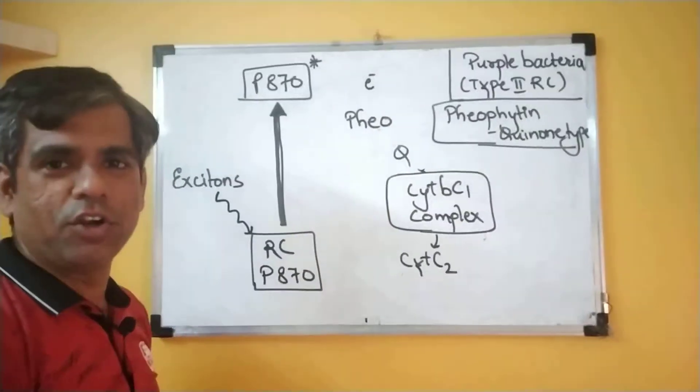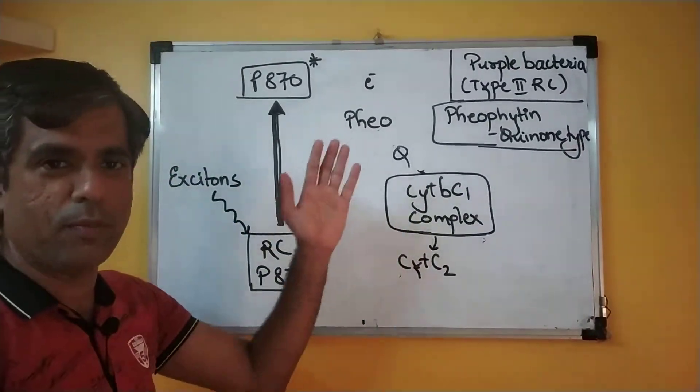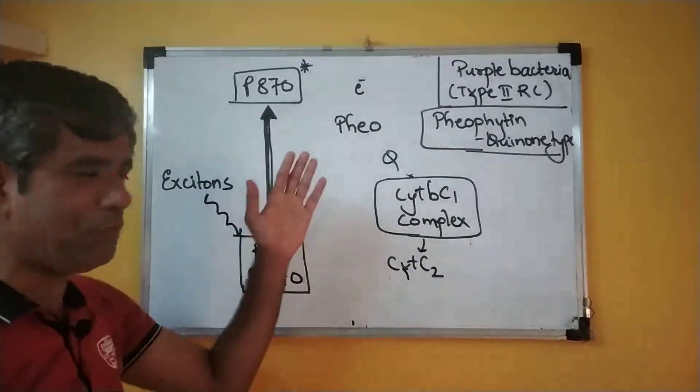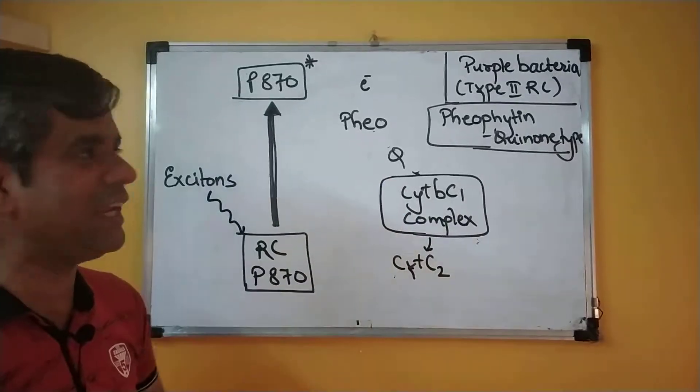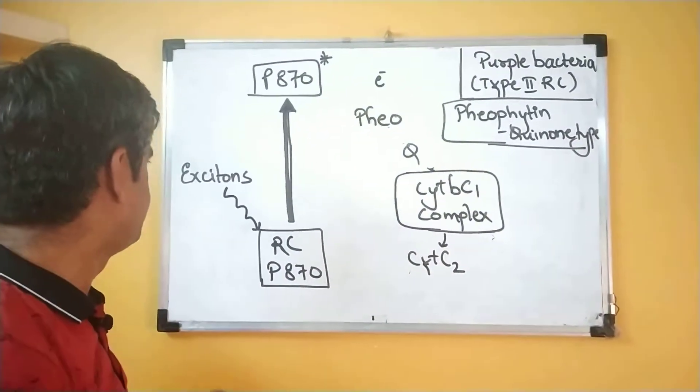The cyclic flow of electrons during photophosphorylation in the purple bacteria with type 2, or pheophytin or quinone type of reaction system.